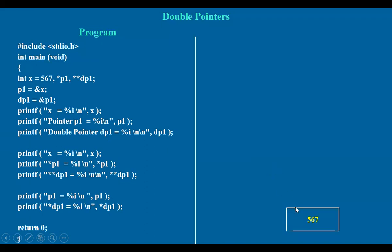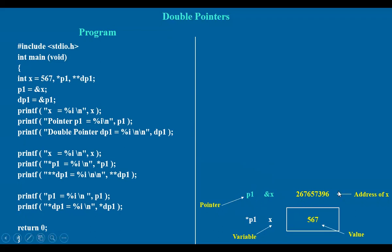To have a clear picture, we have taken the variable x with value 567. This is the address of this variable, obtained with the help of ampersand x — we also call it p1. It is the pointer. To get this value indirectly from this address, the value stored in this particular address is obtained with the help of star p1. This is all we know clearly. Now, the address of this pointer p1 is this one.